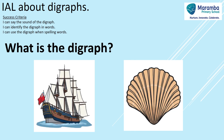Now we have two pictures here. Can you tell me the digraph in the words of these two pictures? The first picture is a ship, and the second picture is a shell. That's right — the digraph is 'sh', which is made up of s and h.